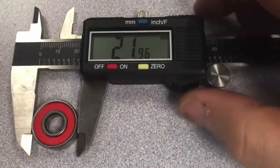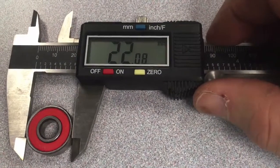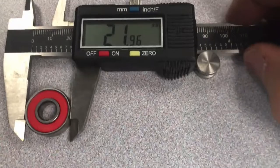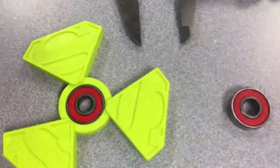Just like that. Twenty-one point nine six. For the fidget spinner activity, we're going to actually use twenty-two. We're going to give it a little bit more so that we can be sure that the bearing will fit inside of the fidget spinner.